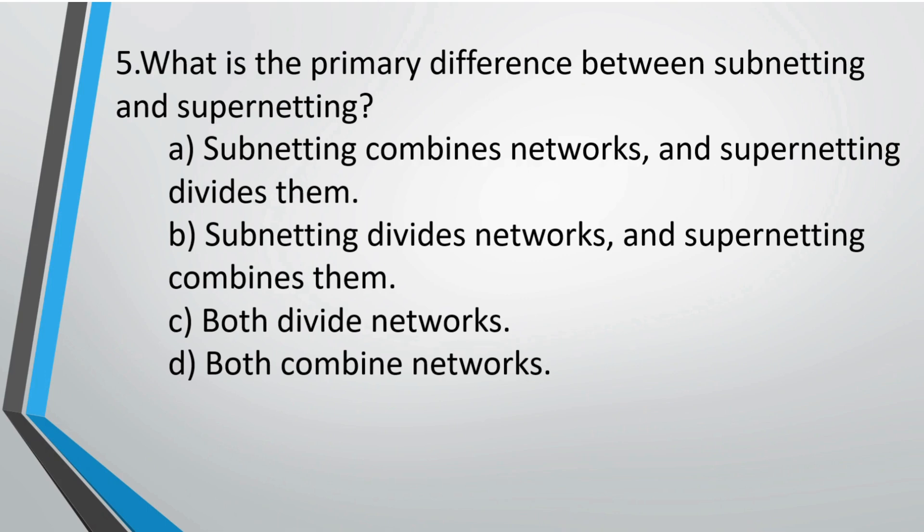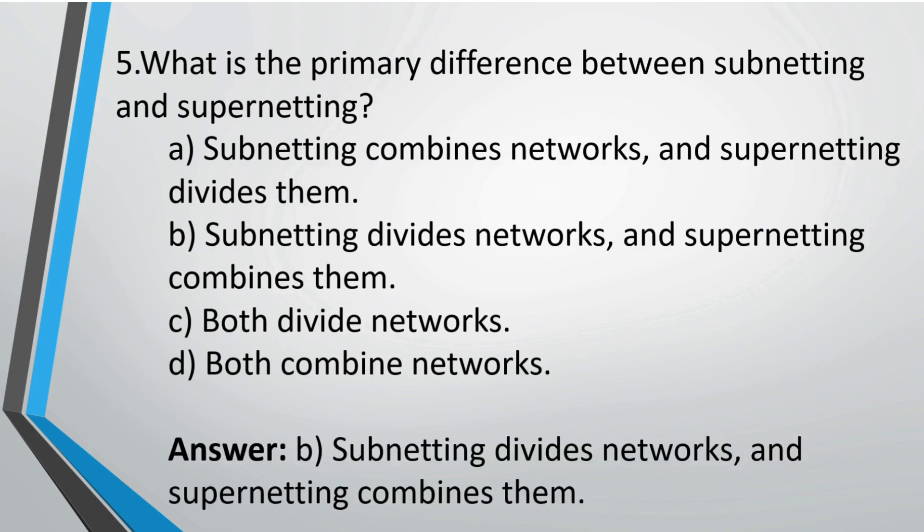Question 5: What is the primary difference between subnetting and supernetting? Option A: subnetting combines networks and supernetting divides; Option B: subnetting divides networks and supernetting combines. The correct answer is option B.